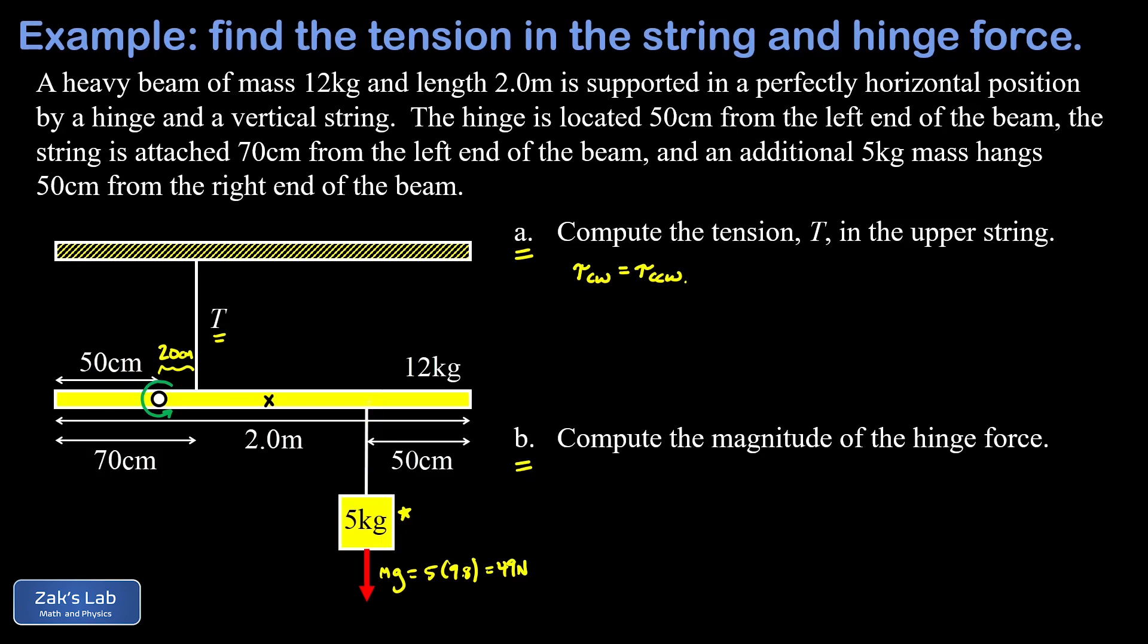Now the other clockwise torque is caused by gravity pulling on the center of mass of this uniform beam and the magnitude of that force, mg, is going to be 12 kilograms times approximately 9.8 meters per second squared and this gives us 117.6 Newtons pulling down on the center of mass of the beam. So there's our two clockwise torques in the problem. This has to be balanced by a counterclockwise torque with respect to the chosen rotation axis in order to keep the system from rotating and that counterclockwise torque is caused by this unknown tension pulling up on the beam 20 centimeters to the right of the rotation axis.